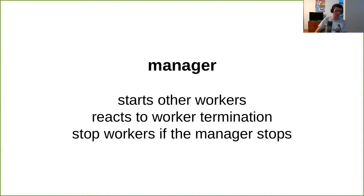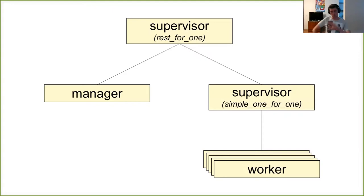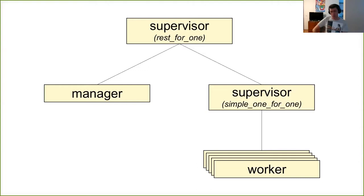In an idiomatic OTP approach, you'd have the manager as a worker with a sibling simple_one_for_one — or in Elixir, a DynamicSupervisor — and the manager would dynamically start workers under that supervisor. We'd use rest_for_one to ensure that if the manager is taken down, the workers are taken down as well. This would definitely work, but I find it a little clumsy.